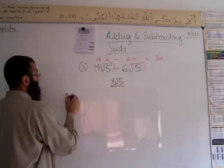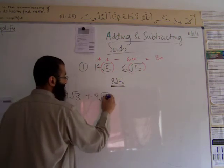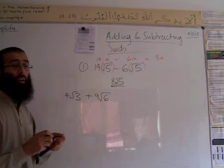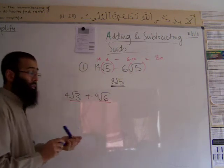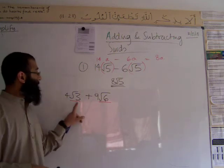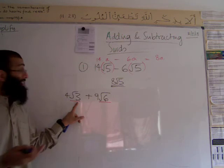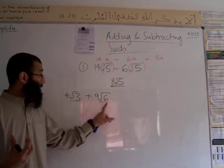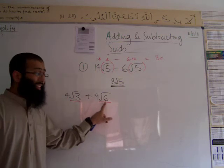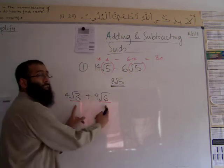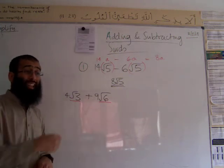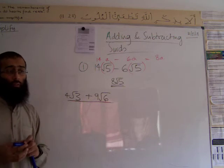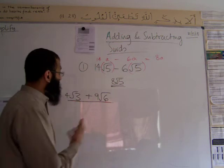The next one we're going to look at: we've got 4 root 3 plus 9 root 6. Now these two terms are not similar, are they? Can we simplify what's inside here? No, that won't simplify any further — you can't take anything out from there. Can we simplify the 6? Is there any square number in the 6 that we can pull out? No. So at the moment this surd here won't simplify. And because there are two different types of surds, can we add them together? No. So here the question is the answer. It won't simplify any further than that. Don't expect every time they give you a question to add or minus that you can actually do something with it.